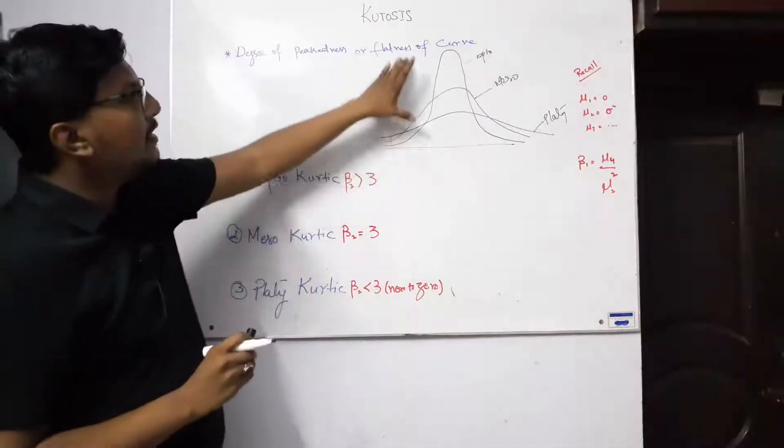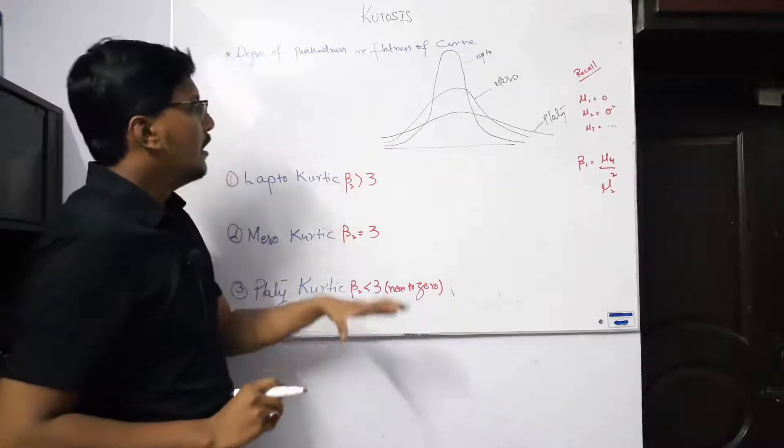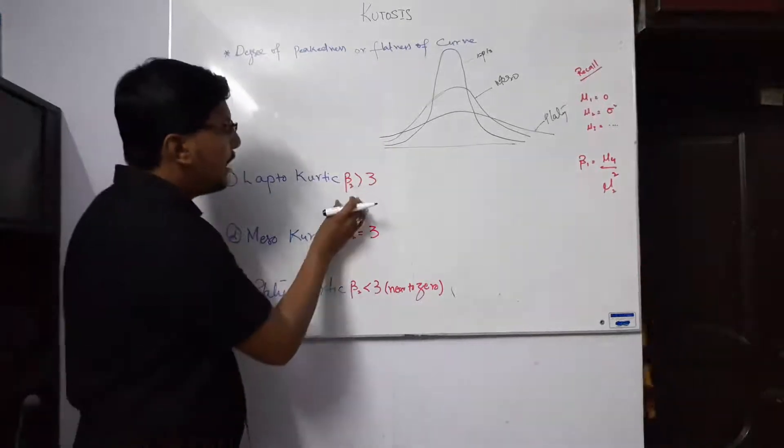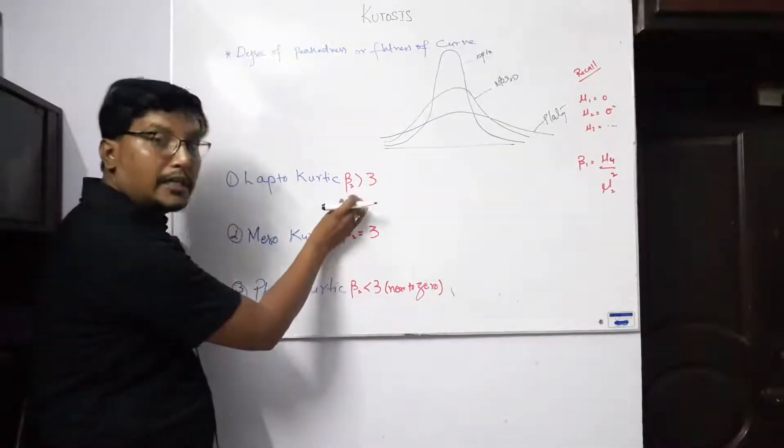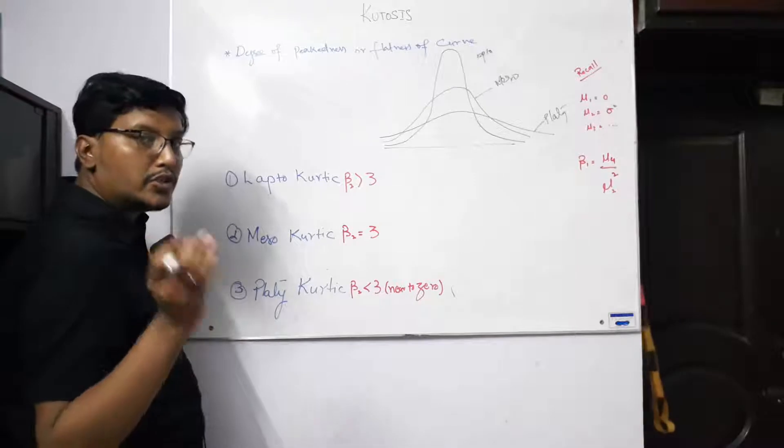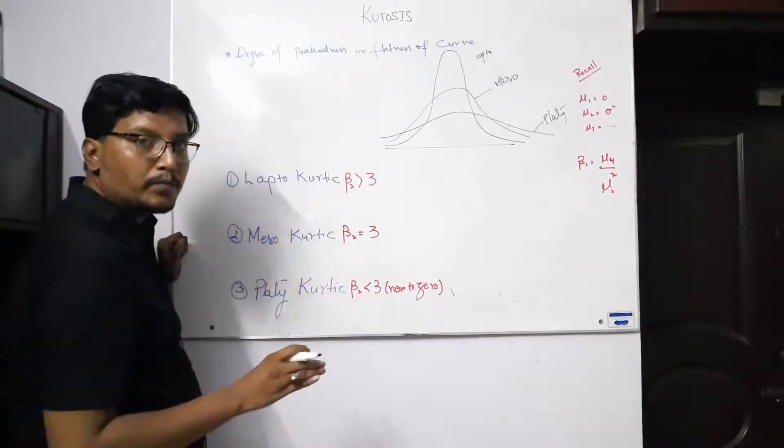These are three different kurtotics: meso and platy. If you have leptokurtic, beta 2, which we call kurtosis—we call beta 1 sign for skewness—beta 2 is used for kurtosis.